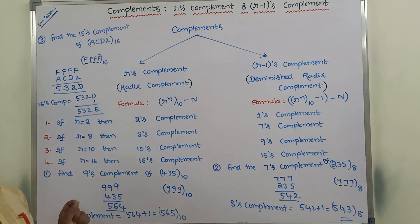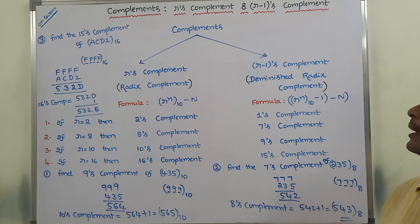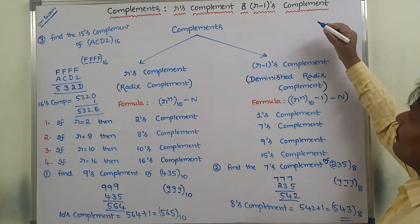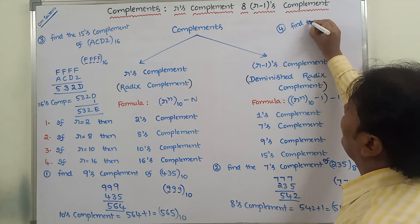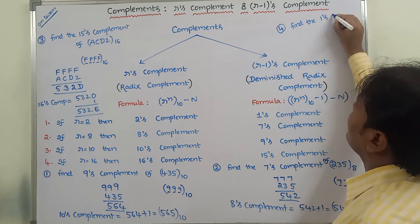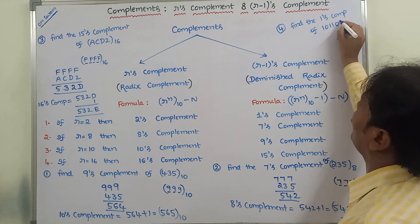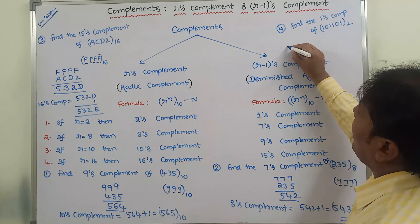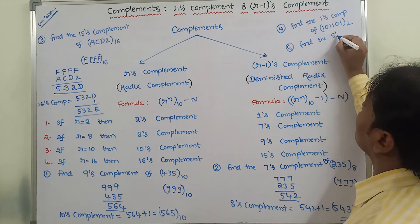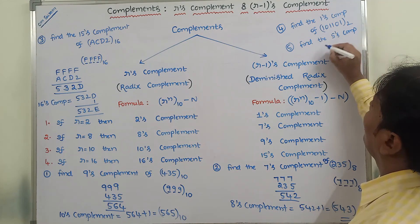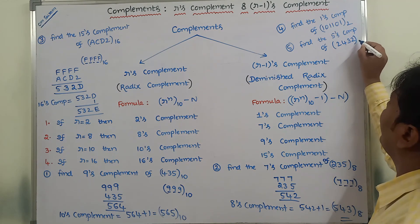In this way, we use the shortcut method to find out any complement of the given number. I am giving two homework problems. First one: find the 1's complement of 101101 base 2. Second one: find the 5's complement of 2432 base 6.